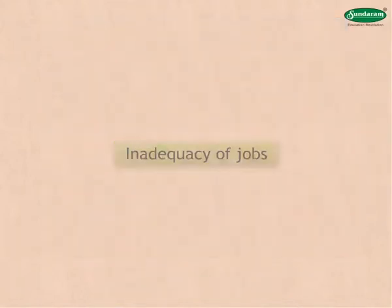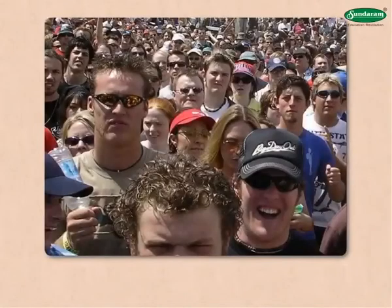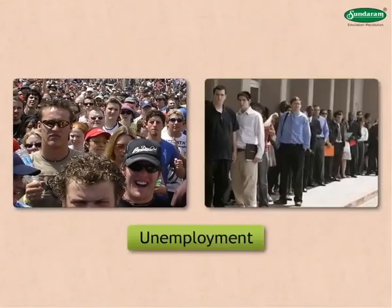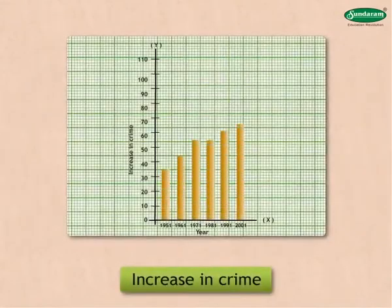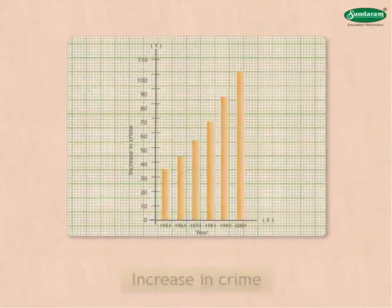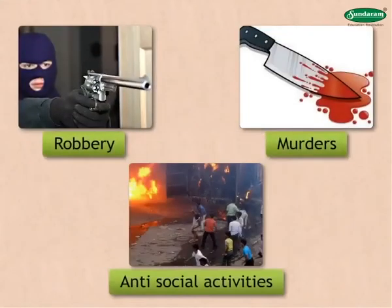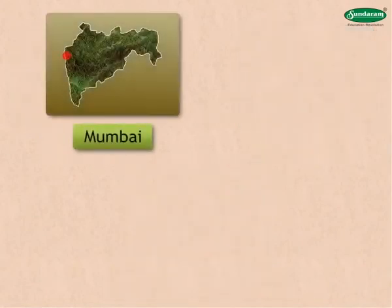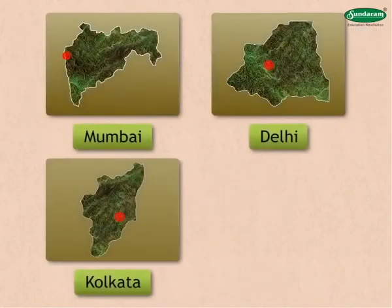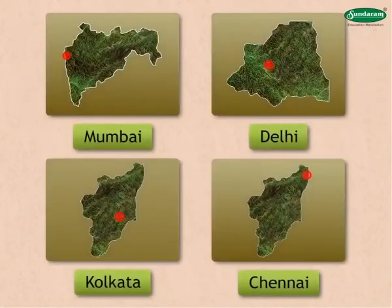Inadequacy of jobs because of increasing population leads to unemployment, and this results in an increase in crimes like robbery, murders, anti-social activities, etc. These problems are particularly witnessed in large metropolitan cities like Mumbai, Delhi, Kolkata, Chennai, etc.